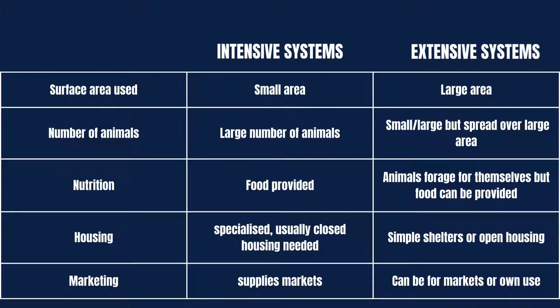In terms of number of animals, intensive systems house a large number of animals, while in extensive systems the number can be small or large but animals are spread over a wide area. In terms of nutrition, animals in an intensive production system have food provided to them — the farmer brings food to the animals. In extensive systems, animals forage for themselves, though food can also be provided.